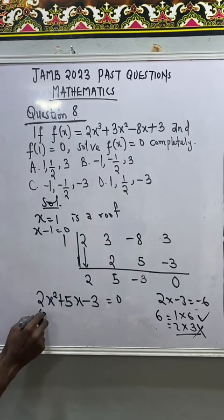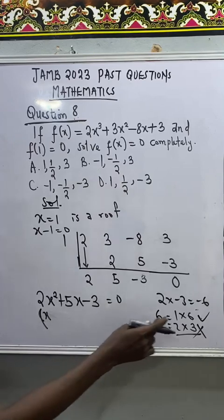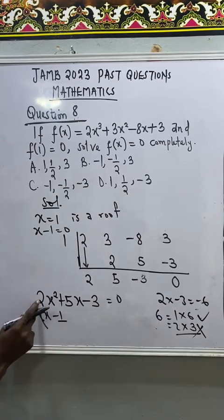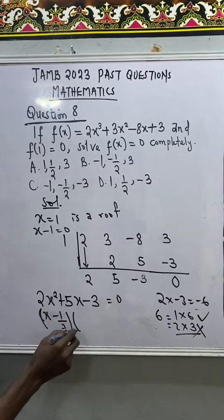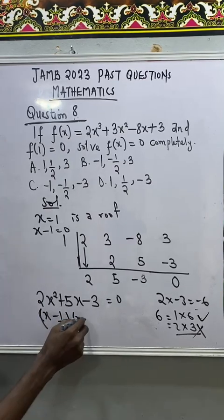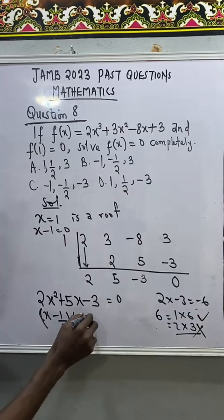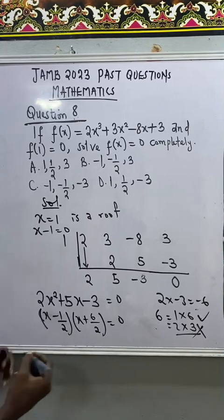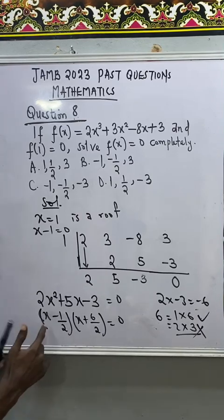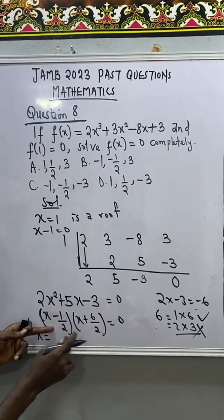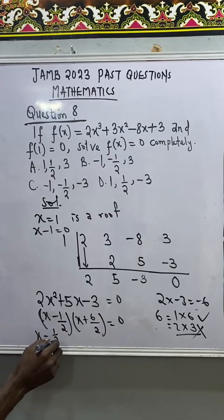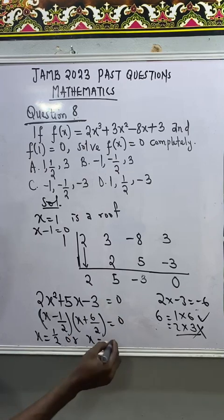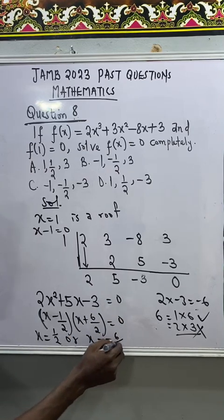So, I will just open a bracket for x minus the smaller one, which is 1, and divided by this original 2. Bracket x again, plus the second one, which is 6, divided by this original 2. So, everything equal to 0. So, instead of wasting your time, just say x equal to, move this to the other side, you have 1 over 2. Or, x equal to, move this, turn the sign of this to minus, that's minus 6 over 2, which is the same thing as minus 3.